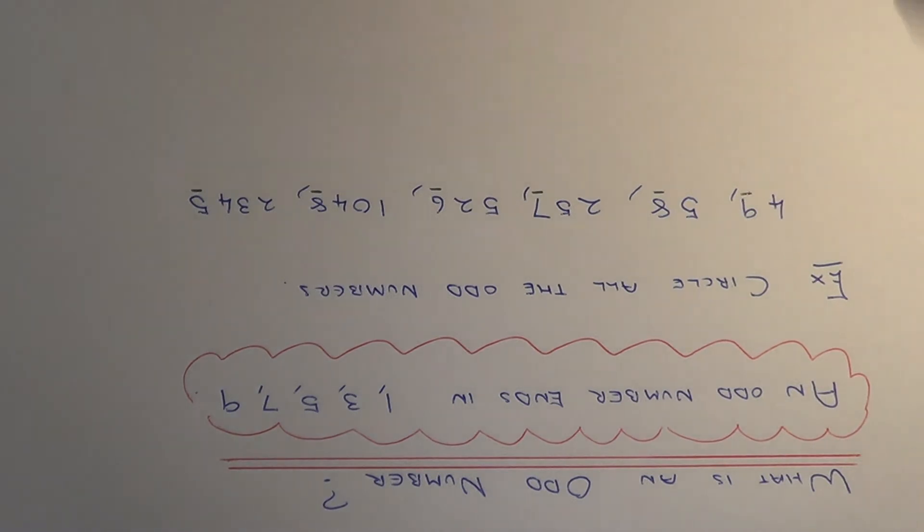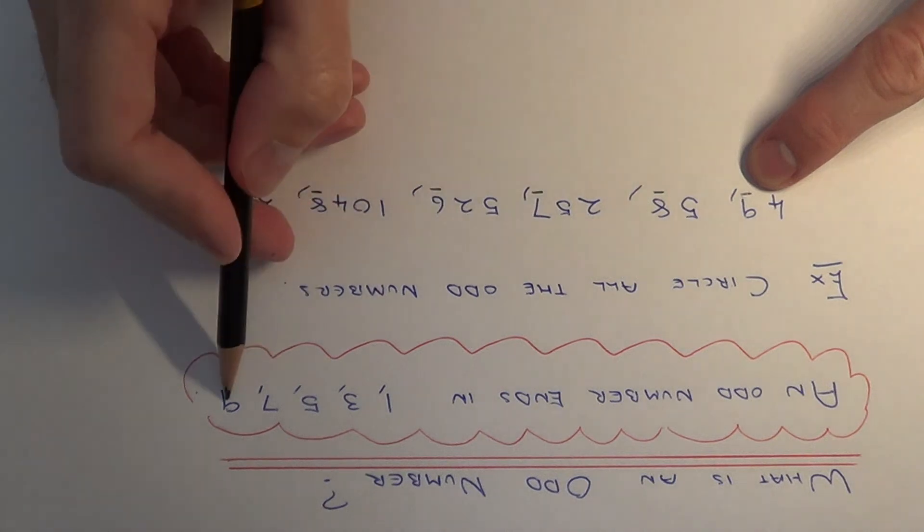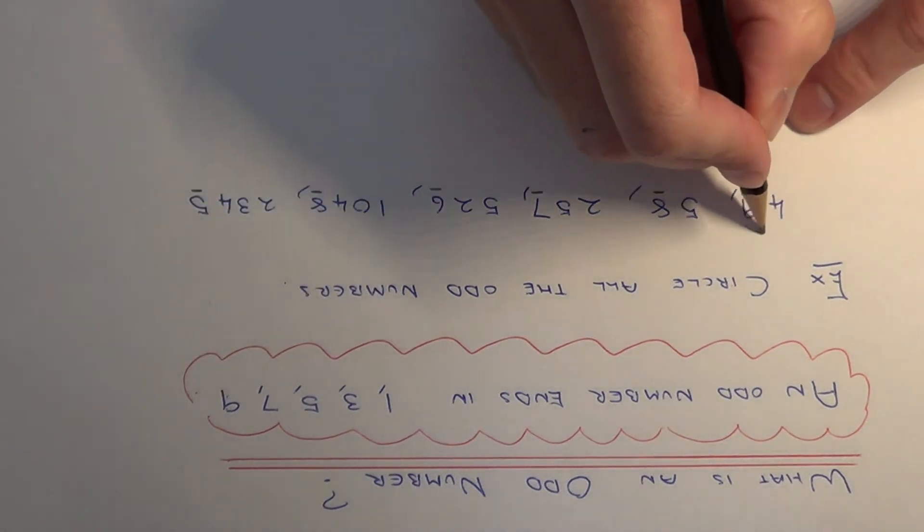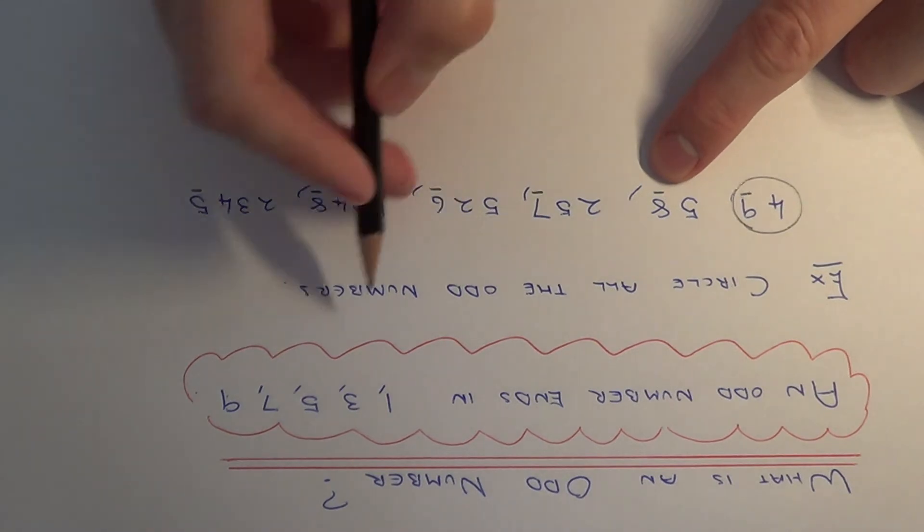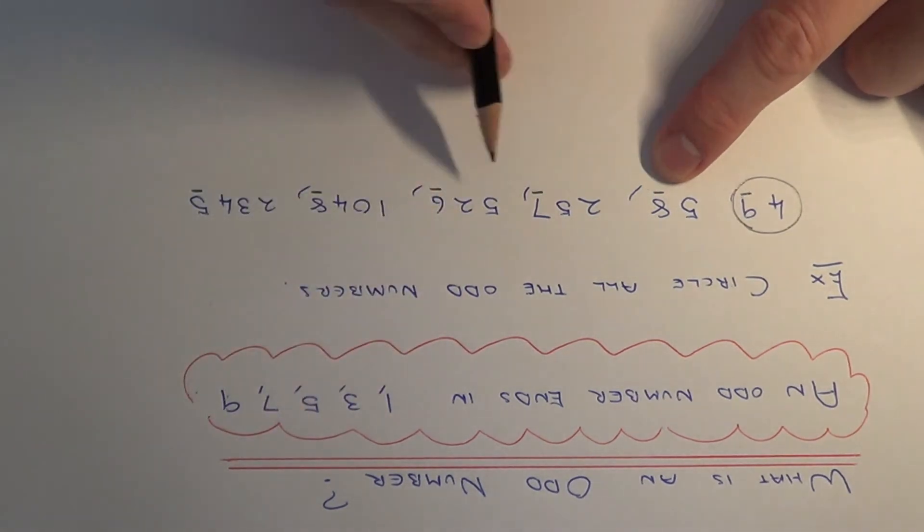So we're just looking at the last digit of each number. As you can see, 9 is an odd number, so this one is going to be odd. 58, well this is not in the list here, this will be an even number.